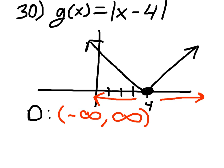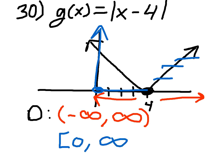And then for range, you can see no vertical shift was made. So I still have outputs that map to zero and all the positive values from there. All these y values from zero inclusive up to infinity.